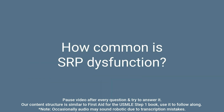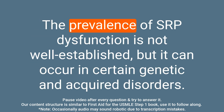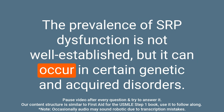Question: How common is SRP dysfunction? Answer: The prevalence of SRP dysfunction is not well established, but it can occur in certain genetic and acquired disorders.